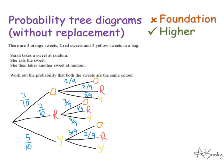If she picks yellow first: there are still three orange out of nine, two red out of nine, but only four yellow sweets left out of nine. Check: all sets of branches add up to one. Three tenths, two tenths, five tenths makes one. Two ninths, two ninths, five ninths makes nine ninths — one. Three ninths, one ninth, five ninths is nine ninths — one. Four ninths, three ninths, two ninths is nine ninths — one. A nice way of checking all branches make sense.